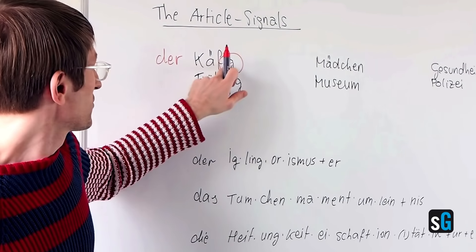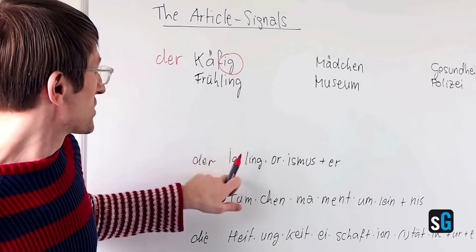And I can find the IG here. So if you look at FRÜHLING, and we look in this line again, I find LING here, telling me FRÜHLING needs the article DER.